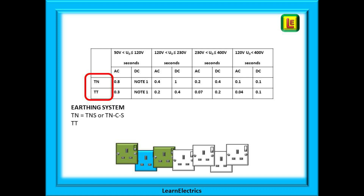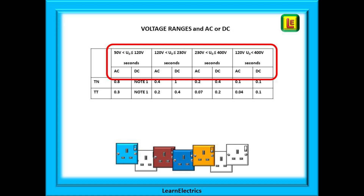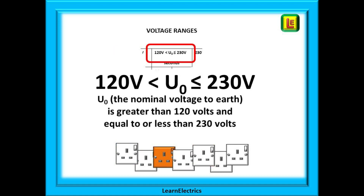First of all let's take a look at the table. On the left, highlighted in red, we have a choice of earthing system — either TN for TNS or TNCS, and TT for those systems using earth rods or similar. At the top of the table we have four voltage ranges to choose from — it is important to choose the correct range. Within each range we have a further choice of AC voltages or DC voltages. U0 is the nominal voltage to earth; in a domestic property U0 is the nominal voltage between line and earth, which we call 230 volts.